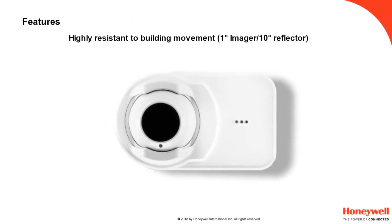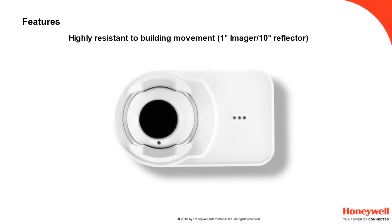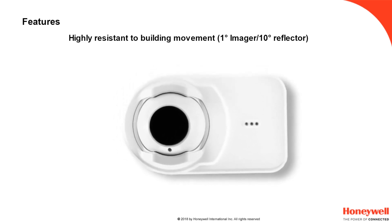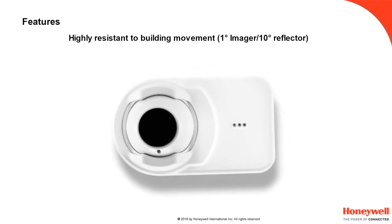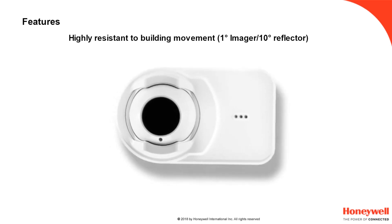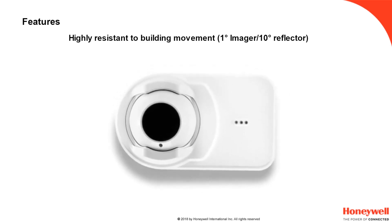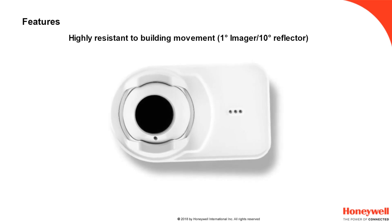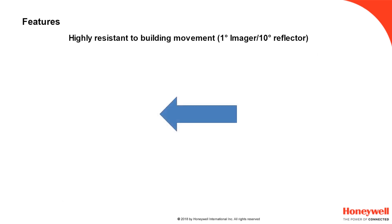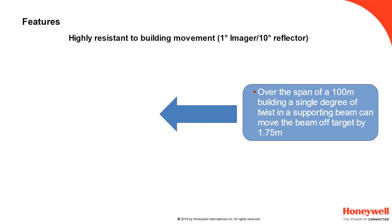The number one issue that beam detectors face is building movement, particularly thermal expansion, contraction and twist within metal-framed factories and warehouses that are a common site for beam detection. The OSID R can accept up to 1 degree of movement in all directions at the detector and 10 degrees at the reflector. At 330 feet or 100 metres, 1 degree of flex at the emitter or detector results in a shift of 5¾ feet or 1.75 metres about its centre.